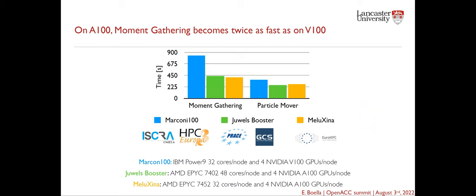We also ran our application on different machines to compare performances. Besides Marconi 100, we ran on Juwels Booster and Meluxina. These machines are interesting because, in addition to different CPU architectures, they have newer Ampere GPUs instead of Volta GPUs. With these newer GPUs, the timing for the moment gathering portion was reduced to basically half. The speedup for the particle mover was less striking, and we think this is because the moment gathering makes heavy use of atomic operations, and Ampere GPUs handle atomic operations better than Volta GPUs.